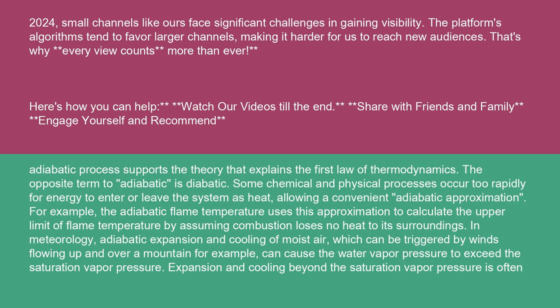The opposite term to adiabatic is diabatic. Some chemical and physical processes occur too rapidly for energy to enter or leave the system as heat, allowing a convenient adiabatic approximation. For example, the adiabatic flame temperature uses this approximation to calculate the upper limit of flame temperature by assuming combustion loses no heat to its surroundings.